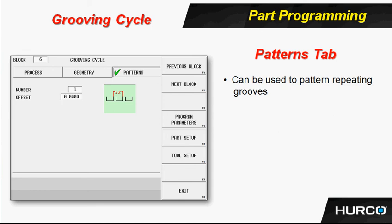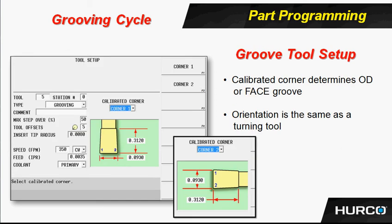Groove tool setup — very similar to what we've seen. You go into the tool setup and select grooving as the type of tool, then enter the information. Notice, however, that we can do turning with a groove tool — using something like an ISCAR cut grip or a groove-turn tool. In that case, you'd call the orientation the same as a turning tool, or the same as a boring bar for an ID grooving tool. That's going to determine the orientation of the tool in the control.